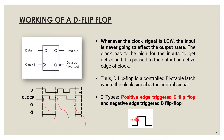Here is an example of the positive edge transition of the clock. The D flip-flop is completely insensitive to any input changes on D except at the positive clock edge. As you can see in the timing diagram, at every positive edge of the clock, the D flip-flop simply copies the D input onto the output and maintains that value until the next active edge of the clock occurs, and this process continues.